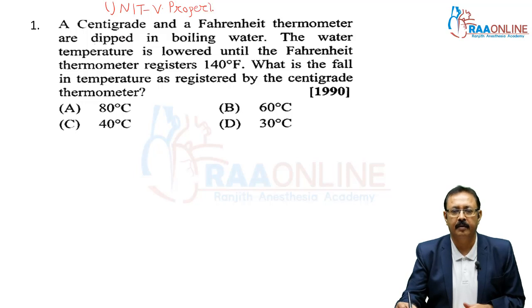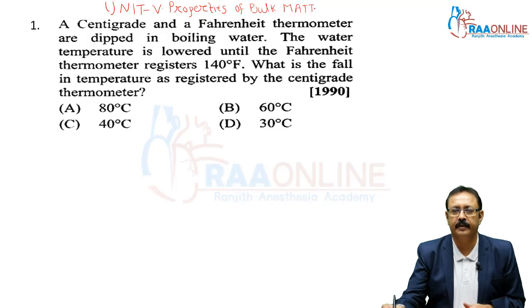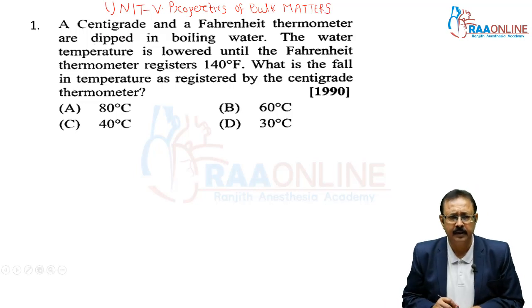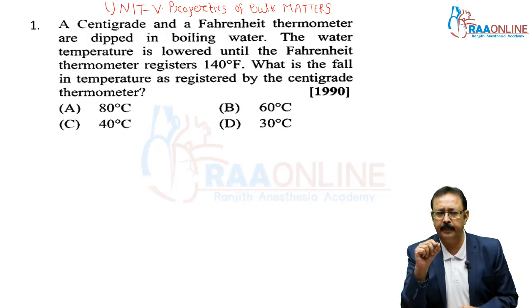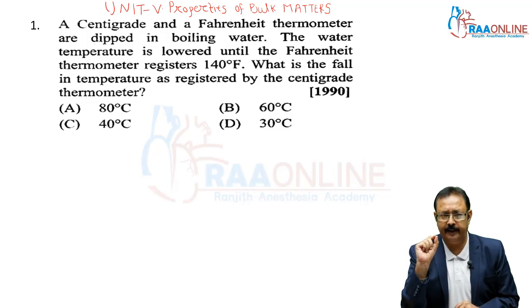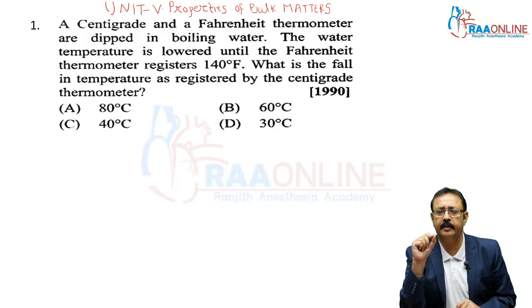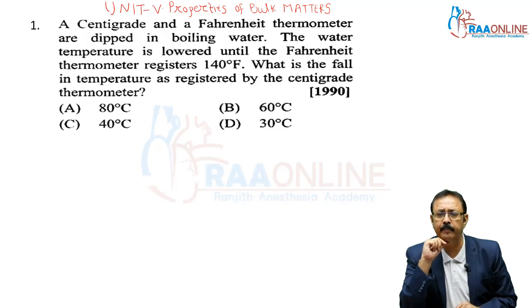The first problem: a centigrade and a Fahrenheit thermometer are dipped in boiling water, which is 100 degrees centigrade. The water temperature is lowered until the Fahrenheit thermometer registers 140 degrees Fahrenheit. What is the fall in temperature as registered by the centigrade thermometer?